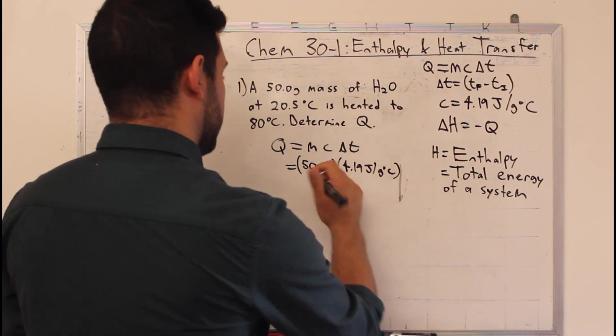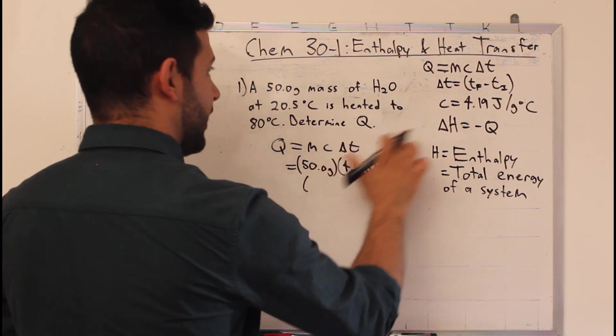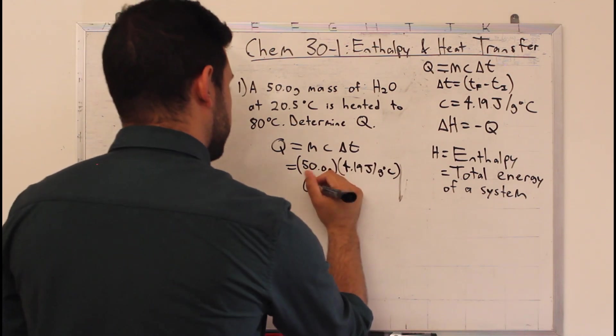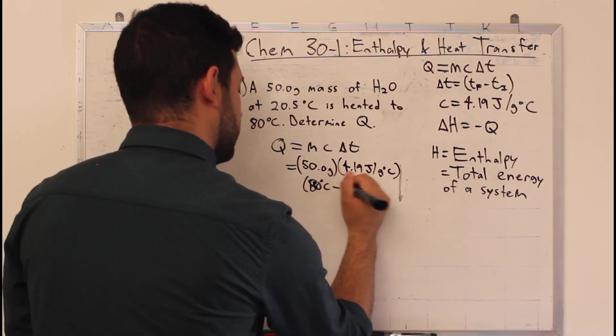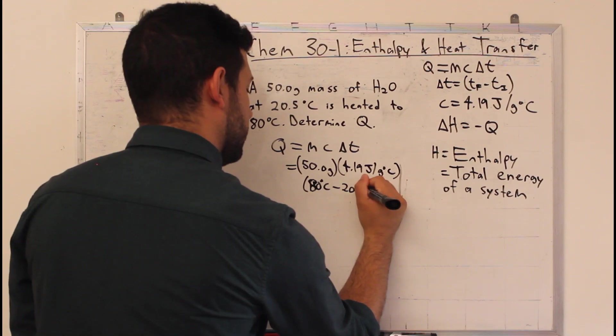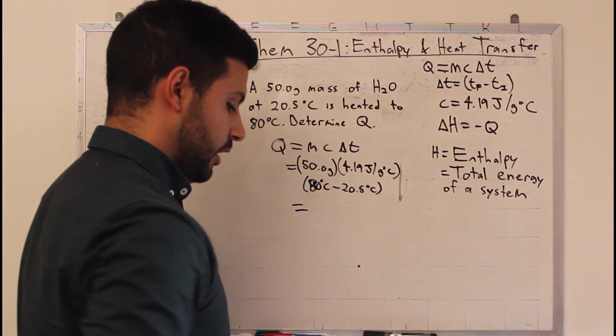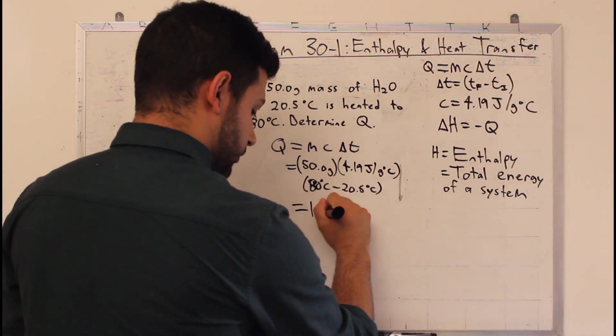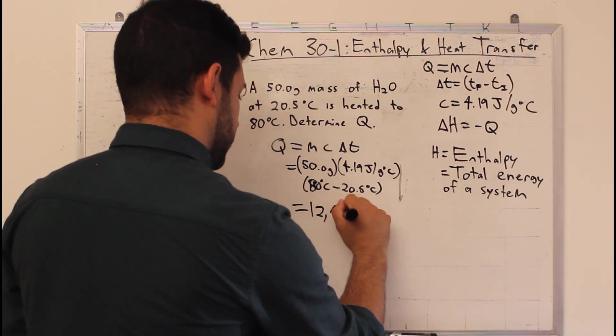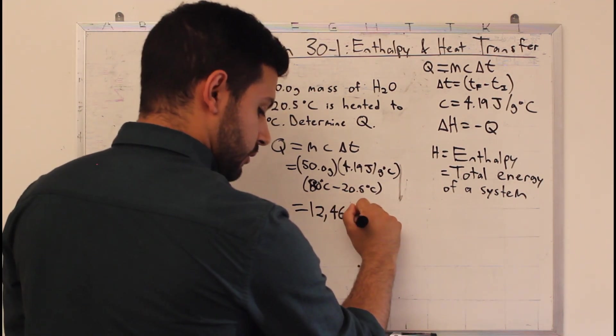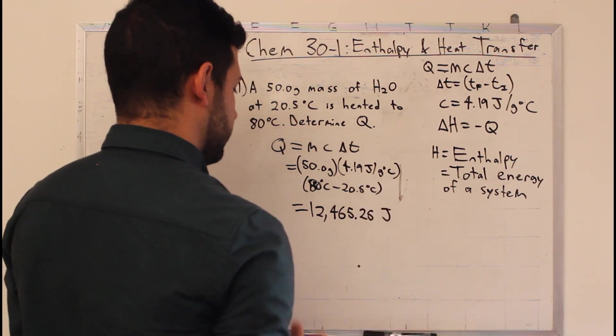Also write it down here, times our final temperature minus our initial temperature, so 80 degrees Celsius minus 20.5 degrees Celsius. You plug that all into the calculator and you get 12,465.25 joules.